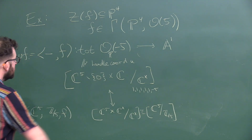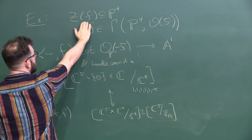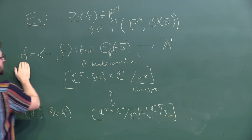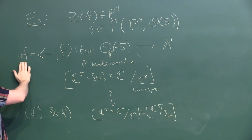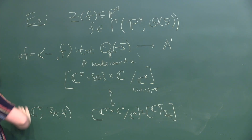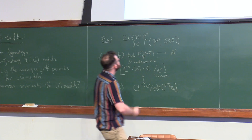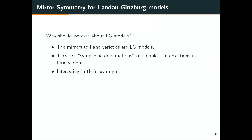In particular, you can recover Z(F) as long as F is smooth as the singular locus. So the Landau-Ginzburg model is telling you what the singularity theory of F is. But one of the main reasons I like them is I just find them neat — they're interesting in their own right, and they give you a kind of global perspective of mirror symmetry.